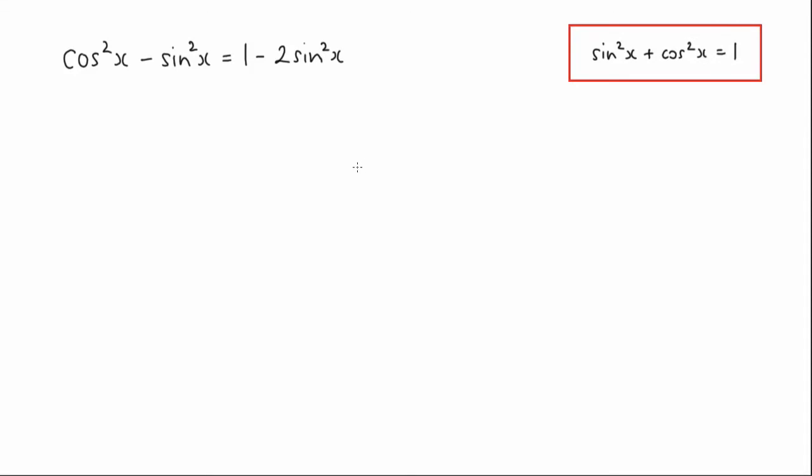In this lesson, we're asked to prove that cos squared x minus sine squared x is equal to 1 minus 2 sine squared x. Now we're going to make use of the rule that sine squared x plus cos squared x is equal to 1.